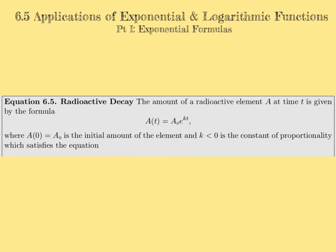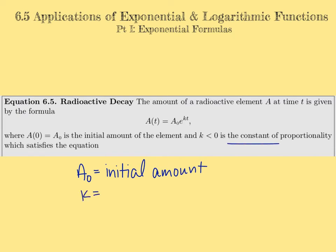Our next formula is radioactive decay. It's the same formula as uninhibited growth — A sub zero times E to the KT — except now K is less than zero because it's decay. A sub zero is the initial amount of the isotope, K is the decay rate or constant of proportionality, and T is time, which could be measured in seconds, minutes, years, or even billions of years.